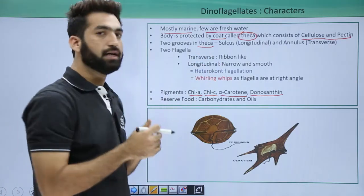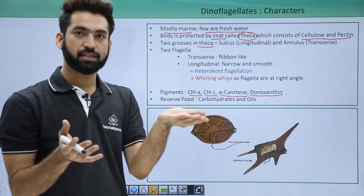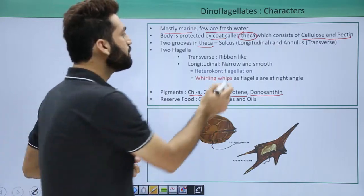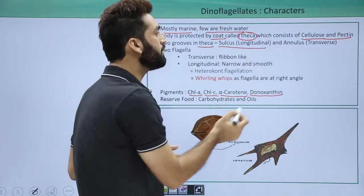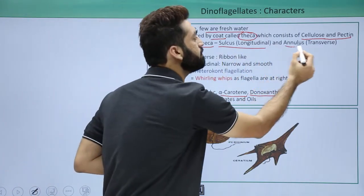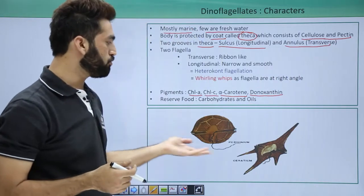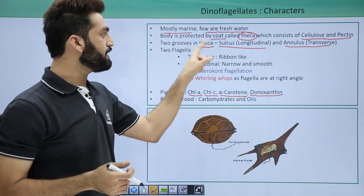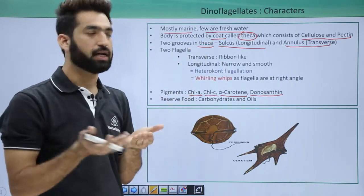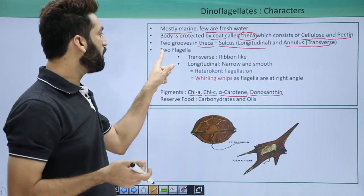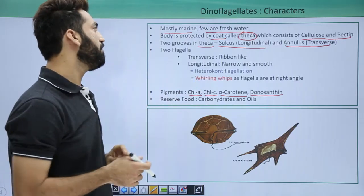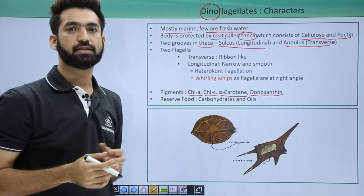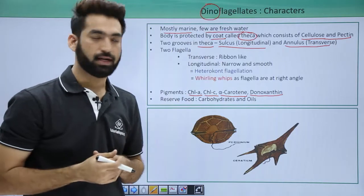Within the structure of the theca there are two groups: a longitudinal group called the sulcus, and a transverse group called the annulus. These groups are named according to their orientation.